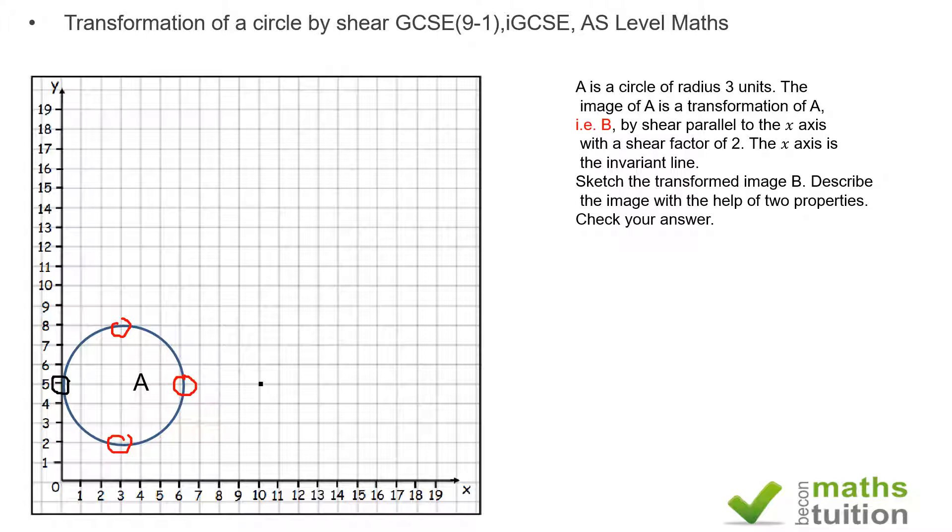Because the shear factor is 2, the distance from the invariant line to the point we are considering is 5, and the shear factor is 2. That means the displacement is going to be 2 times 5, which is 10.